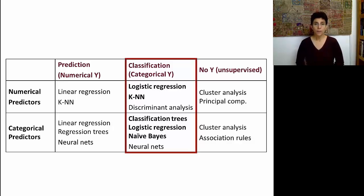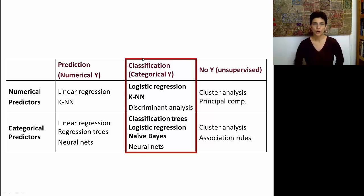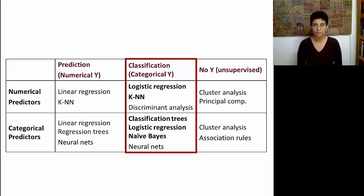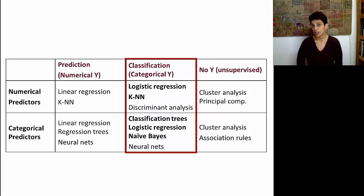In our book and in this course, let me talk about a few of the methods we'll be using. You can see the highlighted column called classification, or categorical Y, split into numerical predictors — supervised learning with numerical predictors — and below, categorical predictors. If our predictors are numerical, logistic regression can work, k-nearest neighbors is another method, and discriminant analysis is also described in the book. When our predictors are strictly categorical, we can use classification trees, and logistic regression works there too.